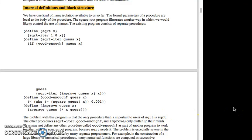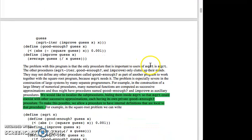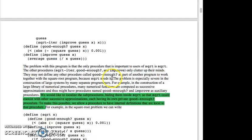Internal definitions and block structure. We have one kind of name isolation available to us so far. Formal parameters of a procedure are local to the body of the procedure. The square root program illustrates another way in which we would like to control the use of names. The existing program consists of separate procedures. The problem with this program is that the only procedure that is important to the user of square root is square root. The other procedures—square root iterate, good enough, and improve—only clutter up their minds. They might not define any other procedure called good enough as part of another program to work together with the square root program because square root needs it. The problem is especially severe in the construction of large systems by many separate programmers.